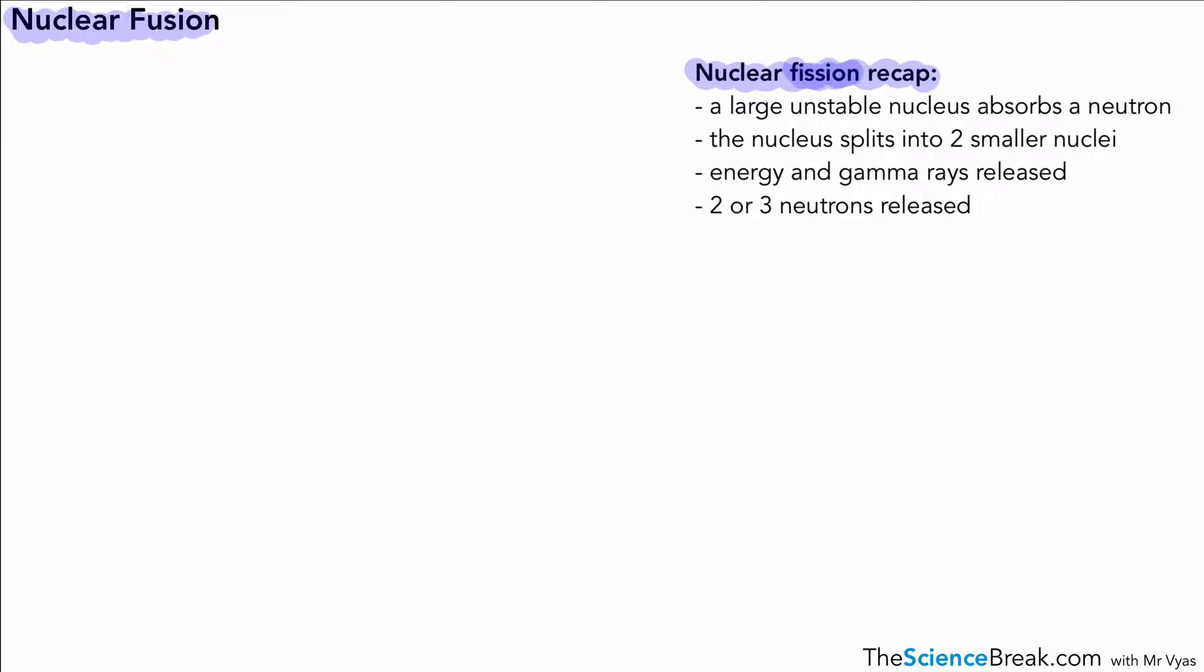The key points that we had about that was that we had a large unstable nucleus of either uranium or plutonium which absorbs a neutron. The nucleus splits into two smaller nuclei of about the same size, and then we have energy released and gamma rays emitted as well. We also had the production of two or three neutrons which could go on to create what we call our chain reaction.